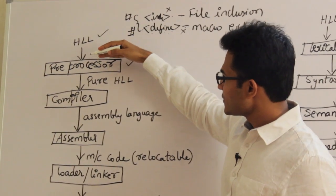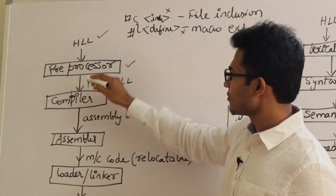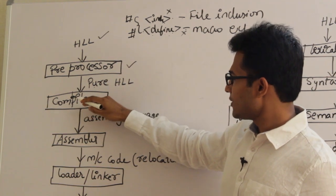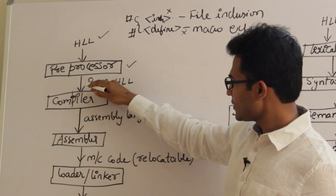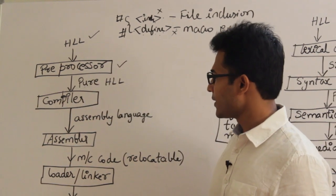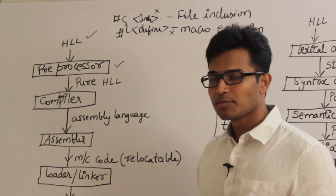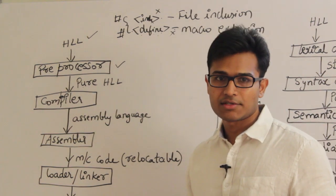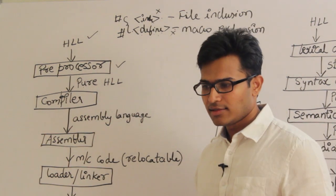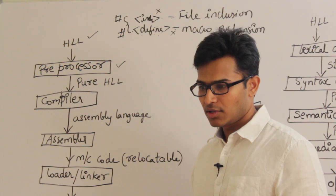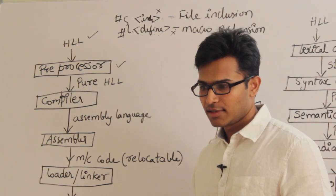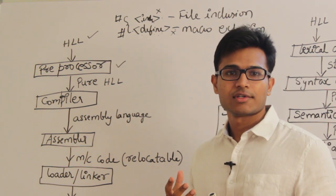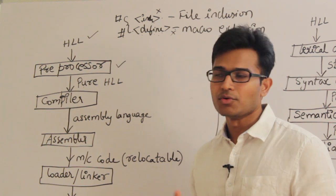After the pre-processor phase, we are going to enter the compiler phase. The input to the compiler is pure high-level language, which means the program will not contain any hash lines, any hashtags. These hashtags are also called pre-processor directives — they direct the pre-processor about what to do.